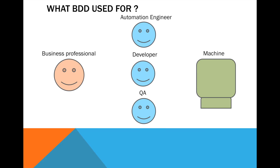BDD was invented to solve a particular communication problem between business and developers. The way to solve this problem is by communicating using examples. The business professionals come up with business ideas they want to realize, and they usually communicate in the form of requirements. The developers — including automation engineers and QA — then transform these requirements into a language they can comprehend by converting them to machine language, which we call coding.